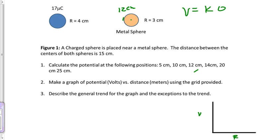So the equation we're going to use is V equals kq divided by r, and let's look at our positions here. We have 5 centimeters, 10 centimeters, 12, and so on. Now 5 centimeters means we are outside of this charge, which is good.